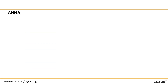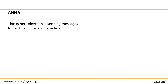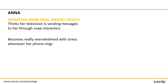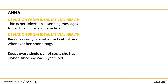Hopefully you got some answers down. Anna thinks that her television is sending messages to her through soap characters — this is deviation from ideal mental health because it's not likely that Anna has an accurate perception of reality. She becomes really overwhelmed and stressed whenever her phone rings — again, ideal mental health, because she's not resisting stress. She keeps every single pair of socks she's owned since she was five, which is a deviation from social norms.